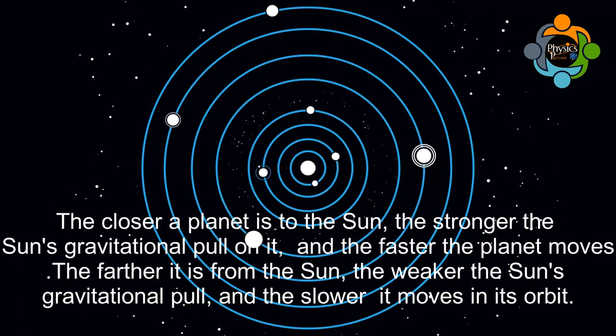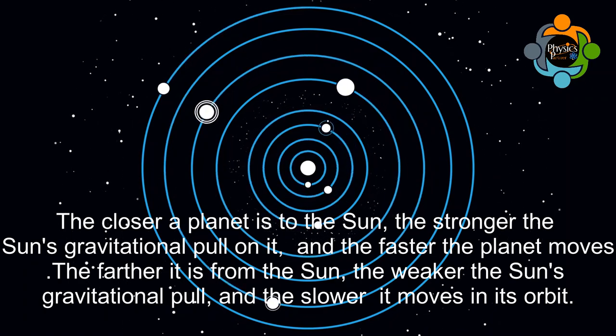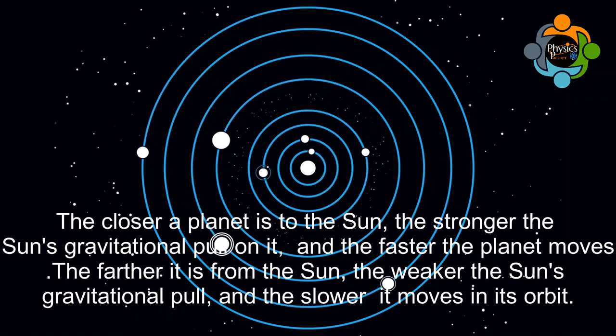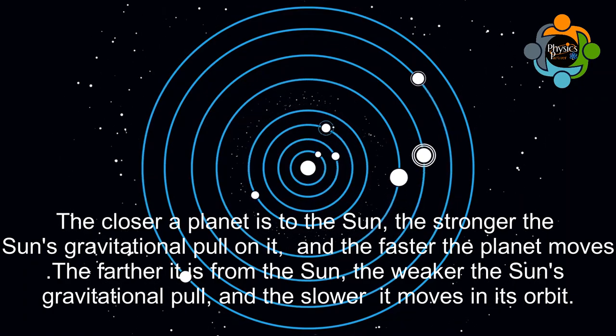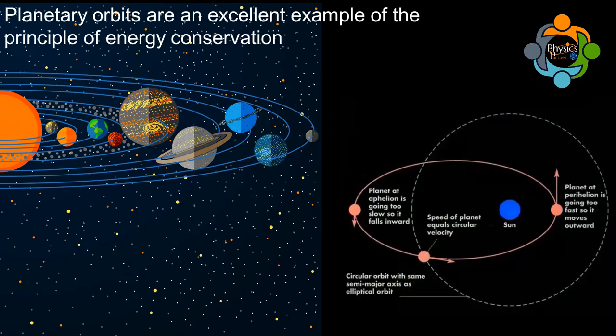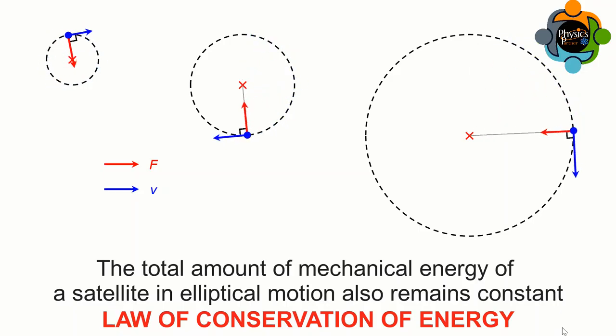A planet's orbital speed changes depending on how far it is from the sun — the closer a planet is, the stronger the sun's gravitational pull on it. Planetary orbits are an excellent example of the principle of energy conservation: over time, a mass in an elliptical orbit converts energy from potential to kinetic and the reverse, while maintaining a constant total energy.